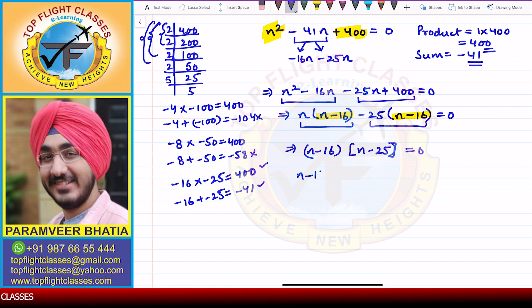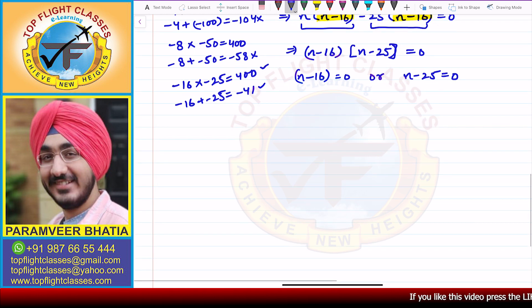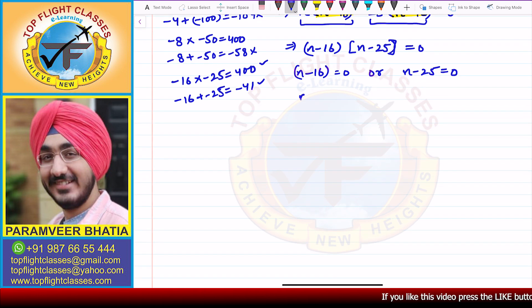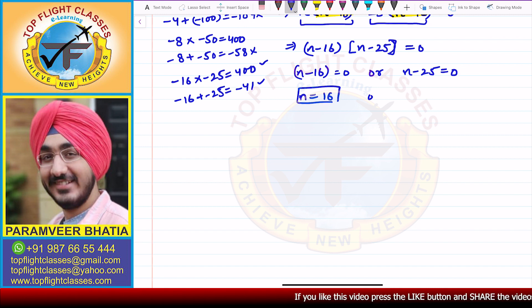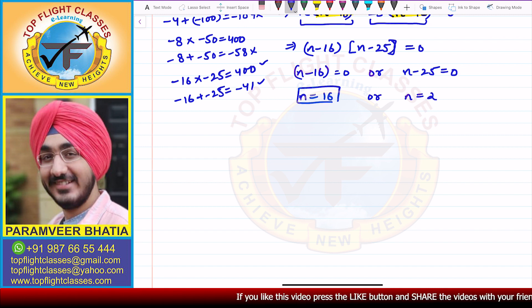So n minus 16 equals 0 and n minus 25 equals 0, giving us n equals 16 or n equals 25.